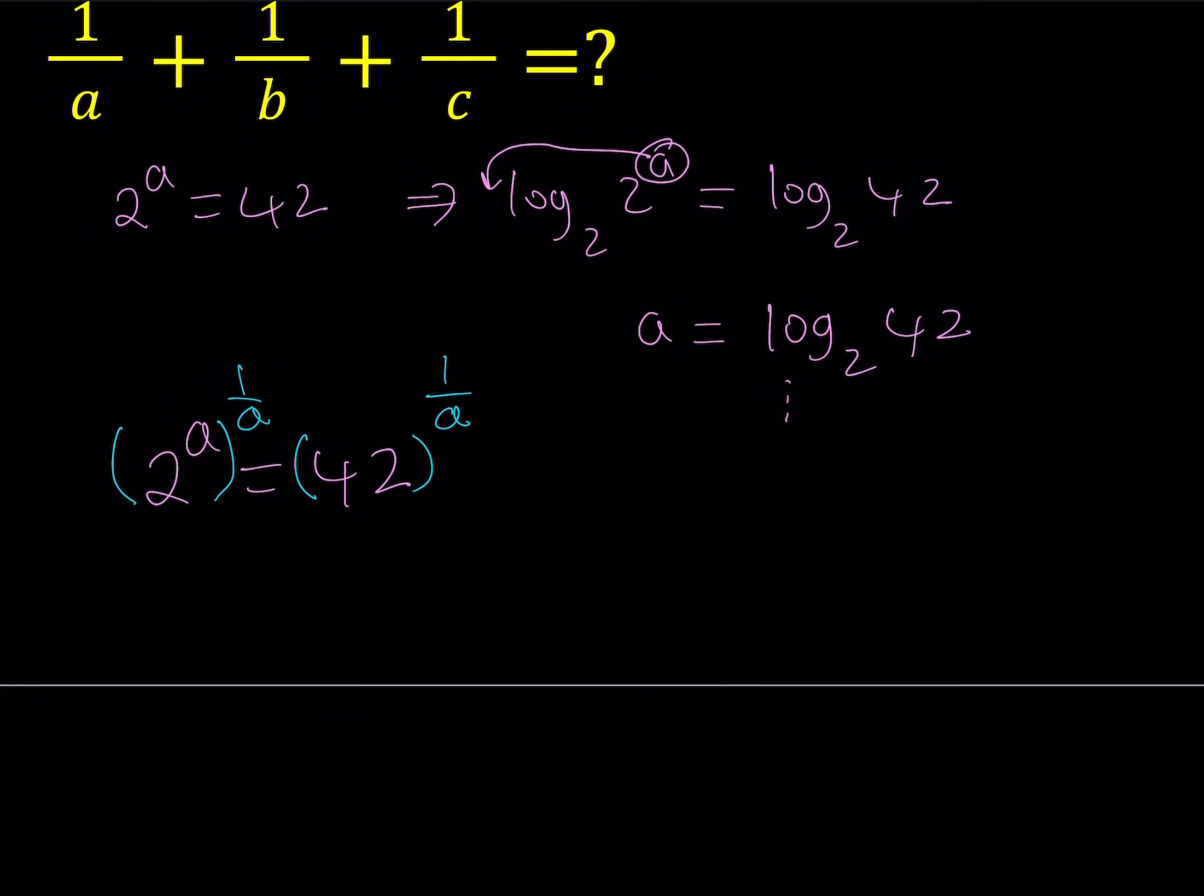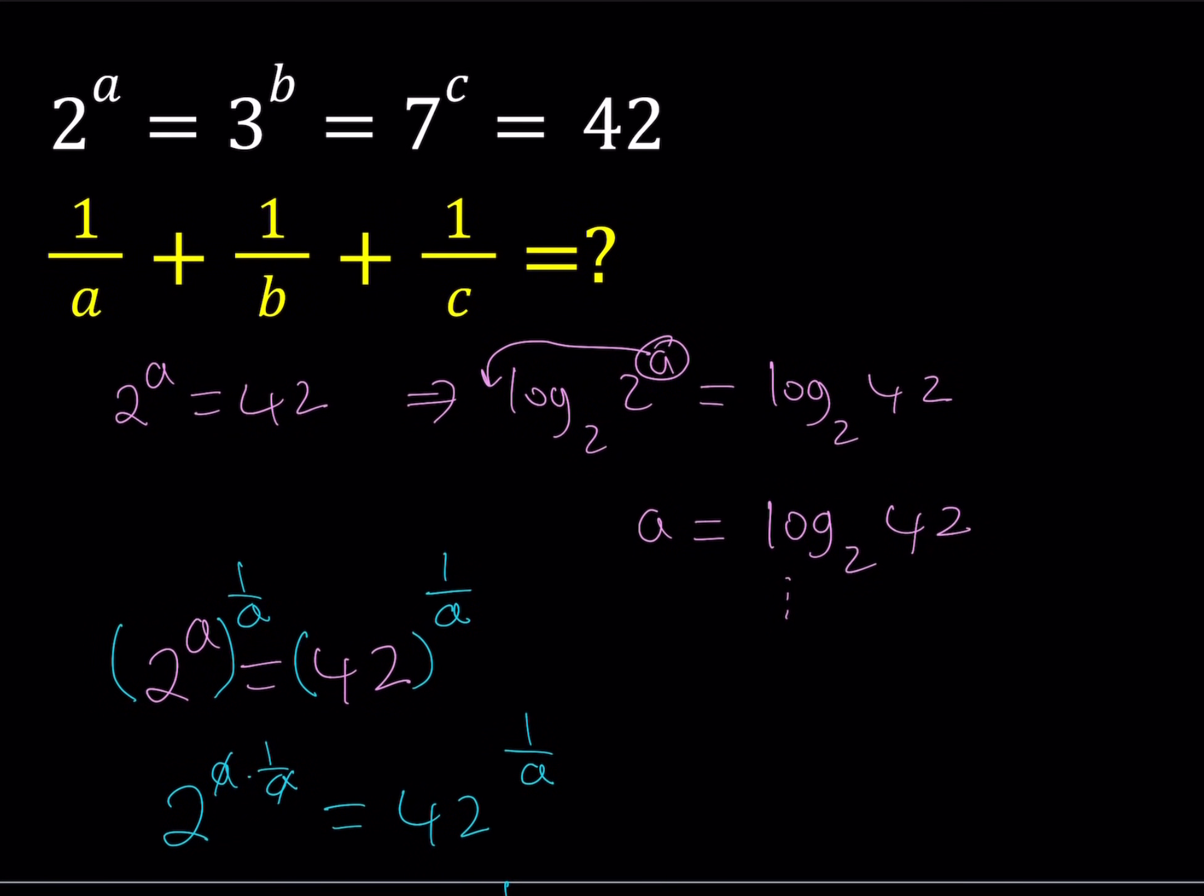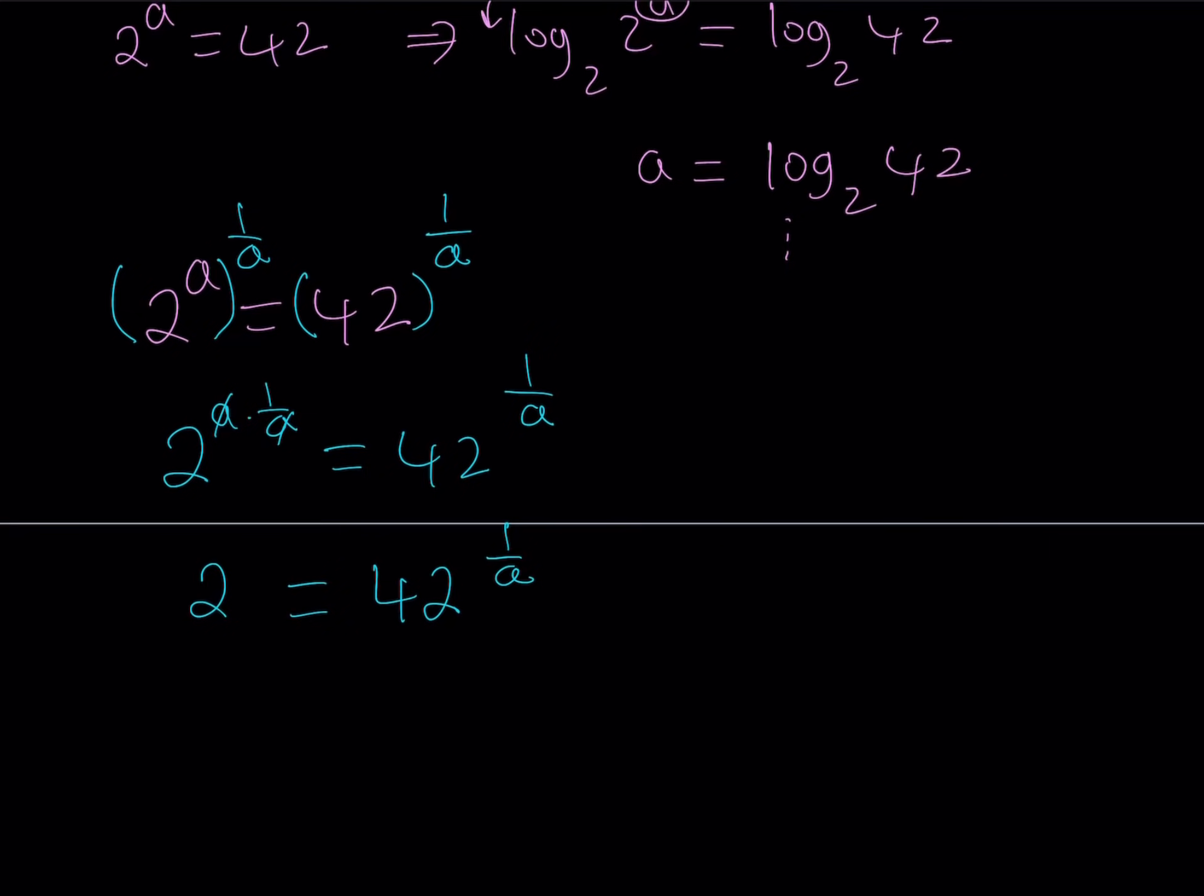Using the power of a power rule, we're going to multiply the powers. That's going to give me 2 to the power A times 1 over A, which becomes 2 to the power 1. And on the right-hand side, I'll be getting 42 to the power 1 over A. So this basically means that 2 equals 42 to the power 1 over A. I was able to express 2 in terms of 42. My goal is to find 1 over A plus 1 over B plus 1 over C, so it makes sense to get 1 over A in our expression, because that's the sum we need to find at the end.